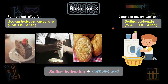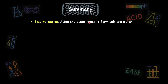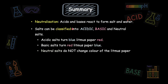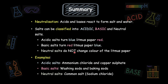To summarize, we learned that salts can be prepared by the neutralization reaction, where acids and bases react to form salt and water. They can be classified into acidic, basic, and neutral salts depending on the type of acid and base reacting with each other. Examples include ammonium chloride and copper sulfate as acidic salts; washing soda and baking soda as basic salts; and common salt as a neutral salt — the king of our kitchen. So the next time you sprinkle salt or do your laundry, remember you are working with chemistry in action.